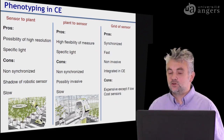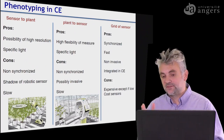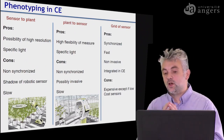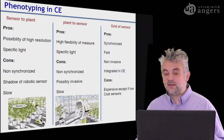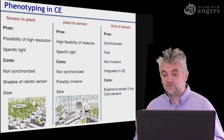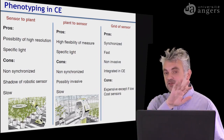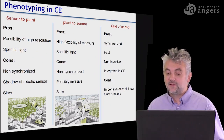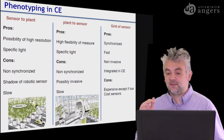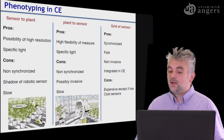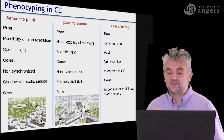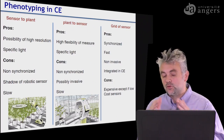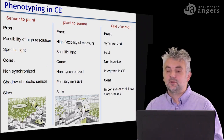The last approach, and the one we will develop during this course, is to use a grid of sensors — meaning replication of the same sensor — enabling synchronized acquisition, fast acquisition, and something which is non-invasive because the sensors are deployed directly inside the controlled environment, integrated in the growth chamber or in the greenhouse. The possible limit is that this approach can be expensive, except if you use low-cost sensors. This is why this course is focused on low-cost sensors used for plant phenotyping.